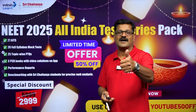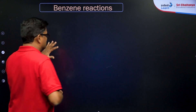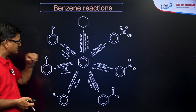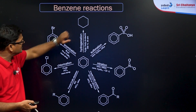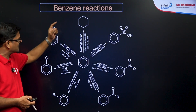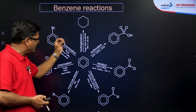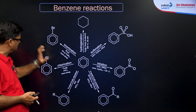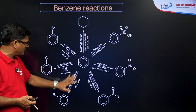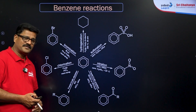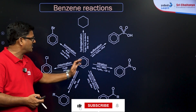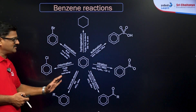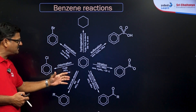Let's start with aromatic compounds and talk about benzene reactions. The golden reactions of benzene include: hydrogenation to form cyclohexane (requiring high temperature and pressure), halogenation, chlorination, Friedel-Craft alkylation, Friedel-Craft acylation, nitration, and sulfonation. These are the golden reactions of benzene, and we will discuss each one along with their mechanism.